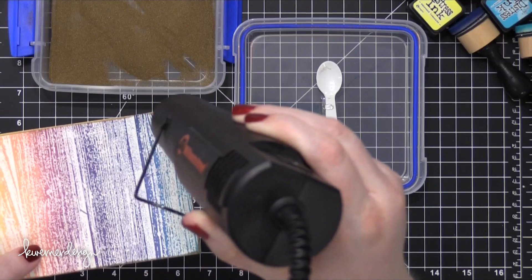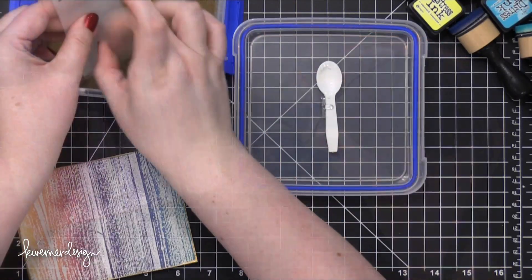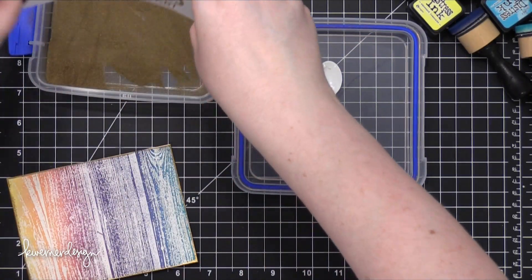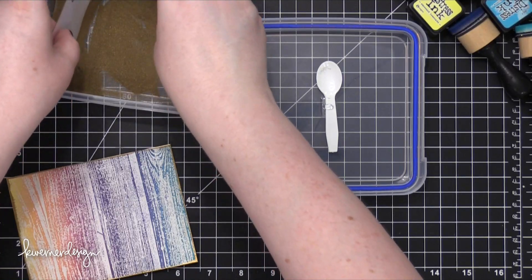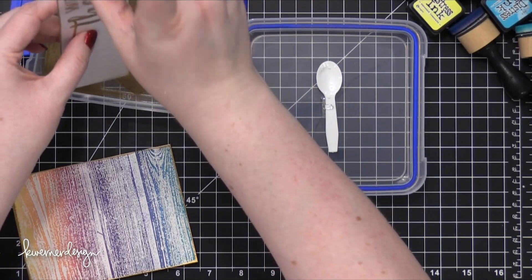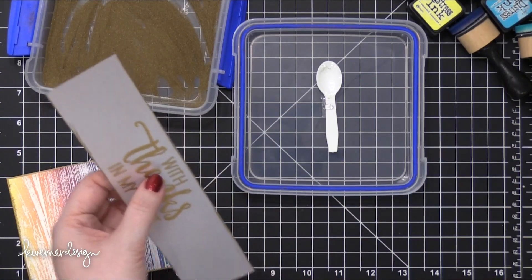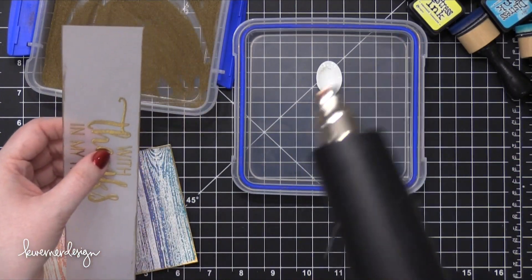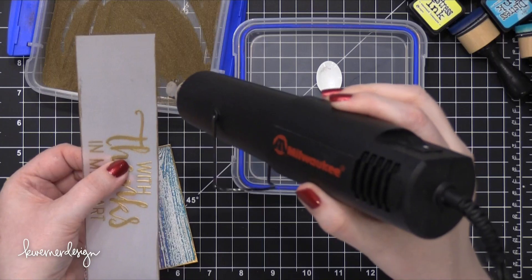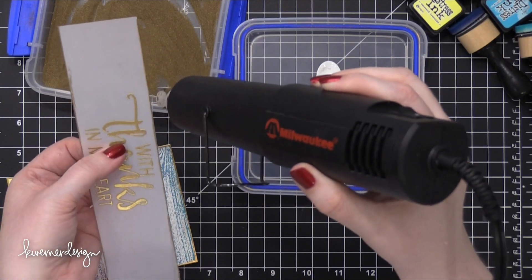So I dipped the edges of each of these pieces into my gold embossing powder and then hit that with my heat tool. This is an advantage to having your heat embossing powders in containers like this. You can really kind of dip your projects into the container. So I'll hit that with my heat tool until it's completely melted.